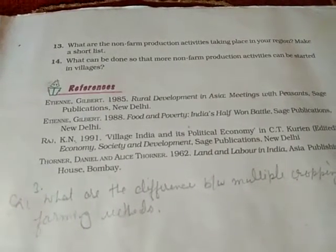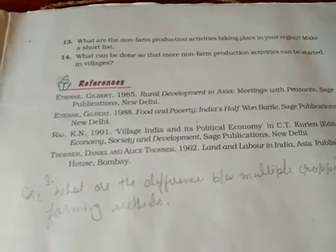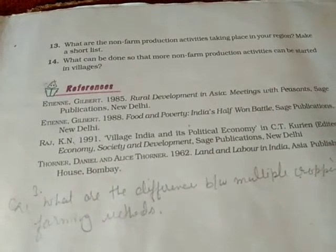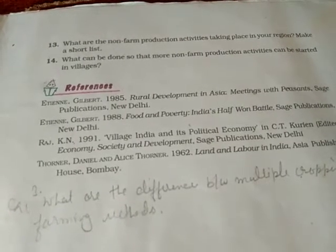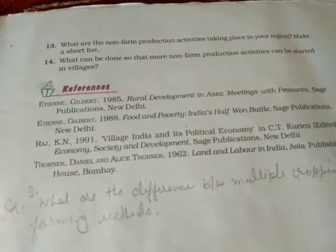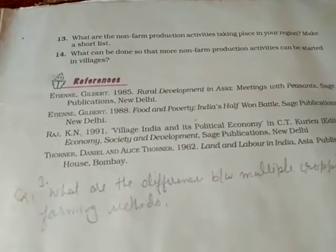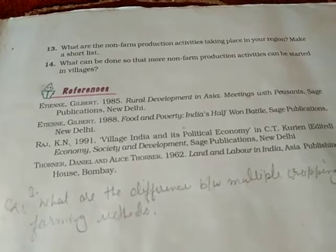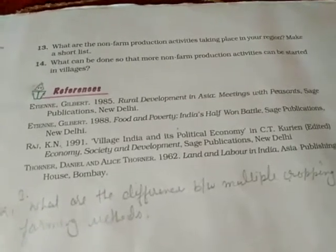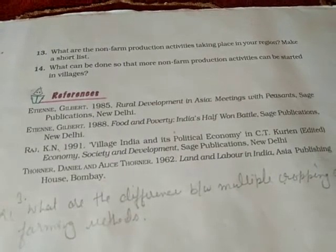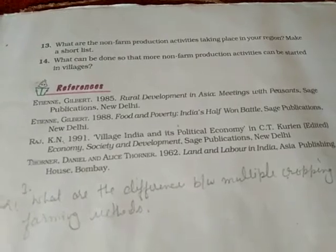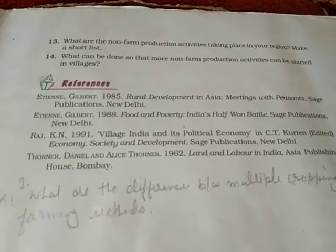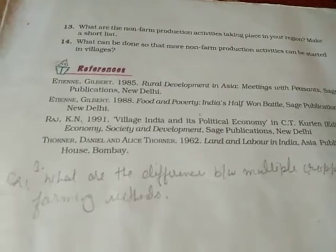Question: What can be done so that more non-farm activities can be started in the village? At present, out of every hundred workers in rural areas, only 24 are engaged in non-farm activities. Steps that can be taken: electricity supply in villages needs to be improved to encourage small-scale industries; more villages should be connected to towns and cities through all-weather roads, transportation, and telephonic systems; and villages should have markets where goods and services can be sold, as in Palampur where neighboring towns provide markets for milk, jaggery, and wheat.